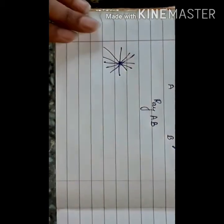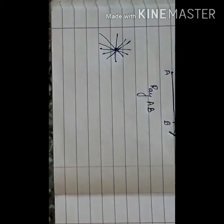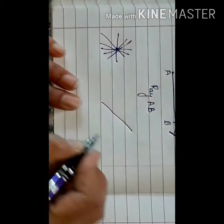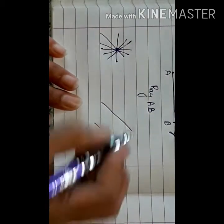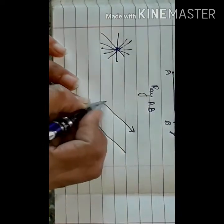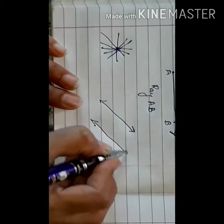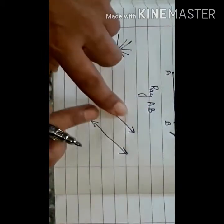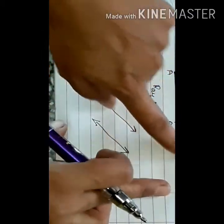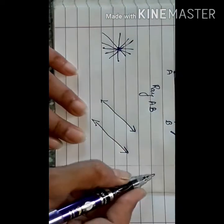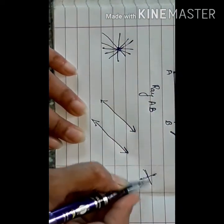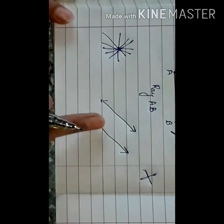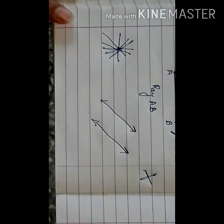The next concept is parallel lines. The lines which never intersect each other are known as parallel lines. When these lines are extended, they go straight and will not intersect. They are going to go in a straight line — such lines are known as parallel lines.